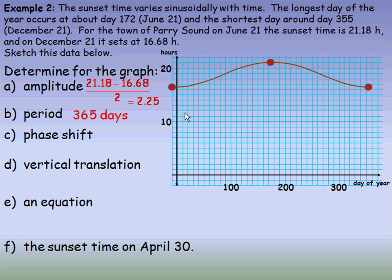For the phase shift, that depends on whether you're using a sine or cosine model. I'm going to use a cosine model because there's certainly a peak. If I want to use a sine model, I'd have to identify exactly where the middle point is, so the peak is very convenient for using a cosine model. I'll think of my cosine curve as starting at day 172, so that horizontal translation must be 172 days to the right.